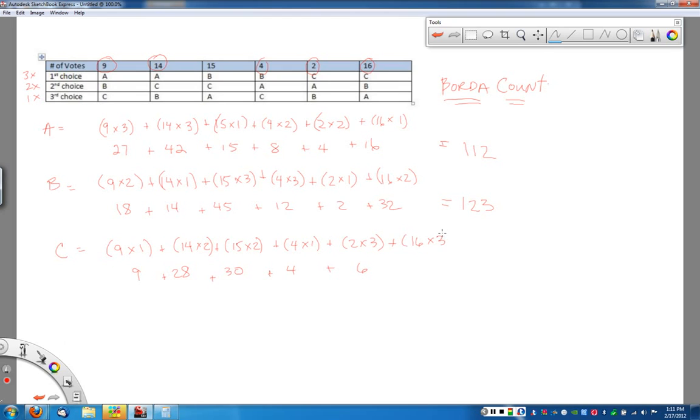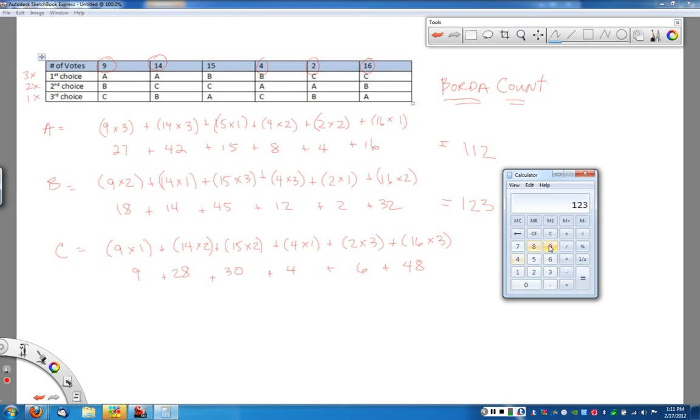And then for the last one, there were 16 votes. I got first place, so three points for each of those 16 votes, which gives me an additional 48 points. Now, again, we're going to total each of these up and see who our grand prize winner is. Let's clear that. So we've got nine plus 28 plus 30 plus 4 plus 6 plus 48, and we end up with 125.